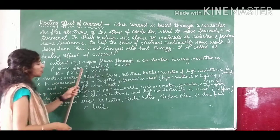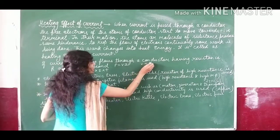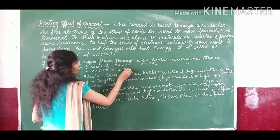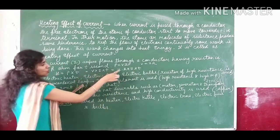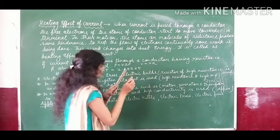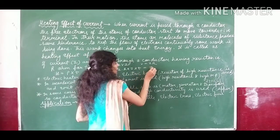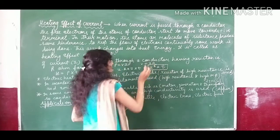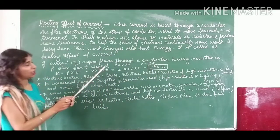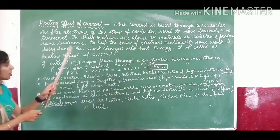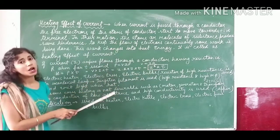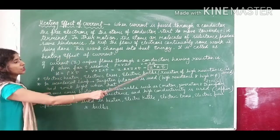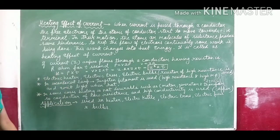The heating effect of electric current can also be expressed in terms of resistance as H = I²RT. Always remember that T here is written in small letter because it represents time, not temperature. Whenever temperature is referred to, it is written as capital T. So H = I²RT is the formula for the heating effect of electric current.